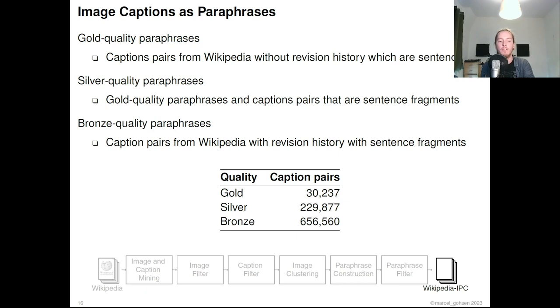For bronze-quality paraphrases, we incorporate Wikipedia article's revision history. We found that these have a lot of similar captions, which is why we define them to be of bronze quality. Of these, we have around 657,000.